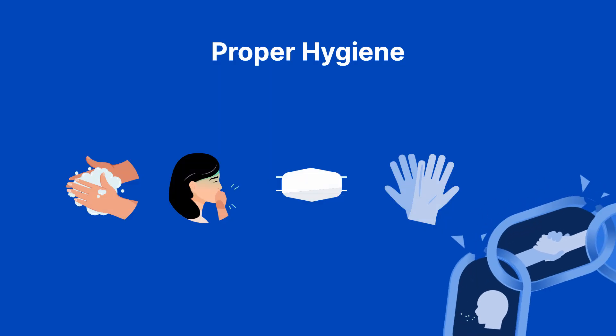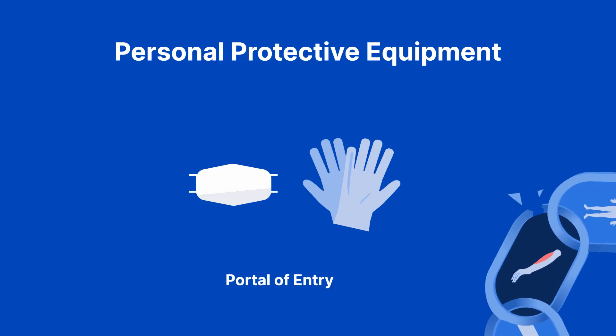Proper hygiene, like handwashing, covering coughs, and using personal protective equipment breaks the chain at both the portal of exit and mode of transmission, preventing transmission of respiratory infections in healthcare settings. Handwashing is the number one way to prevent the spread of infection. Protecting potential entry points by using personal protective equipment such as masks or gloves helps block the portal of entry — for example, wearing gloves when handling contaminated materials reduces the risk of infection.